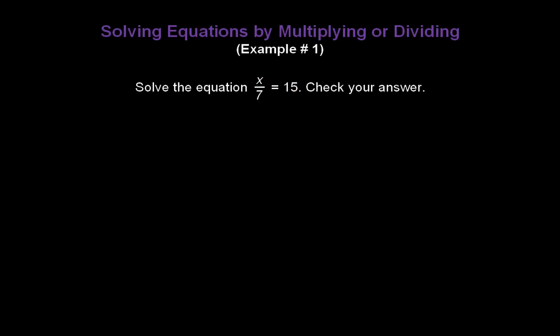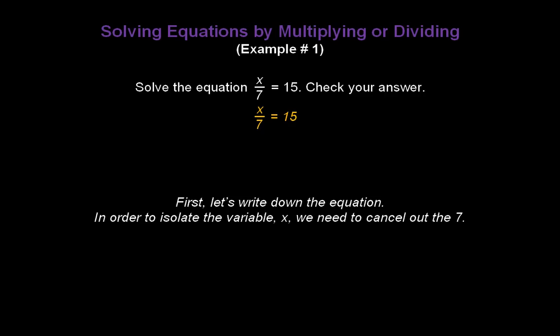Let's solve this equation: x divided by 7 equals 15. And let's check our answer. First, let's write down the equation. x divided by 7 equals 15.